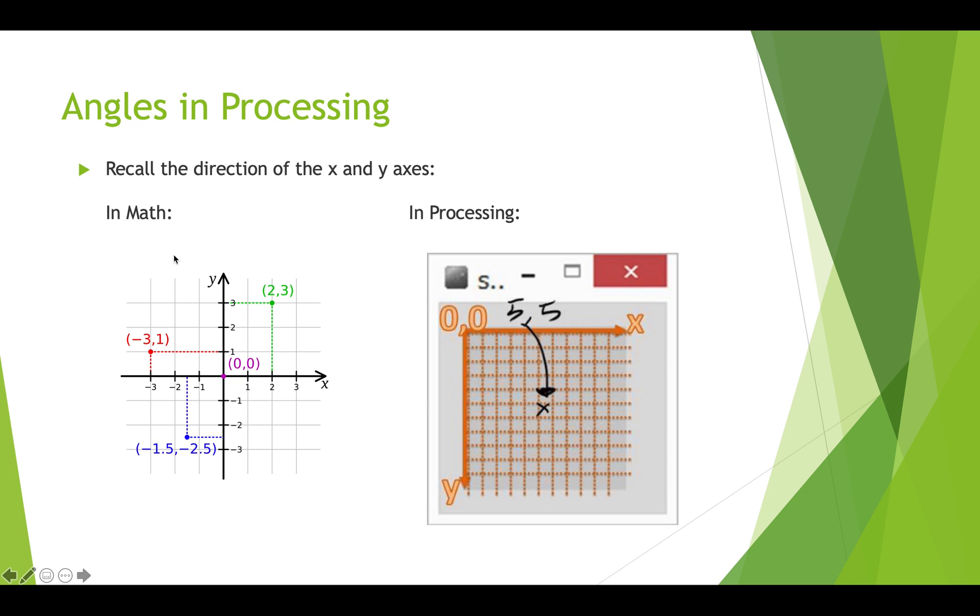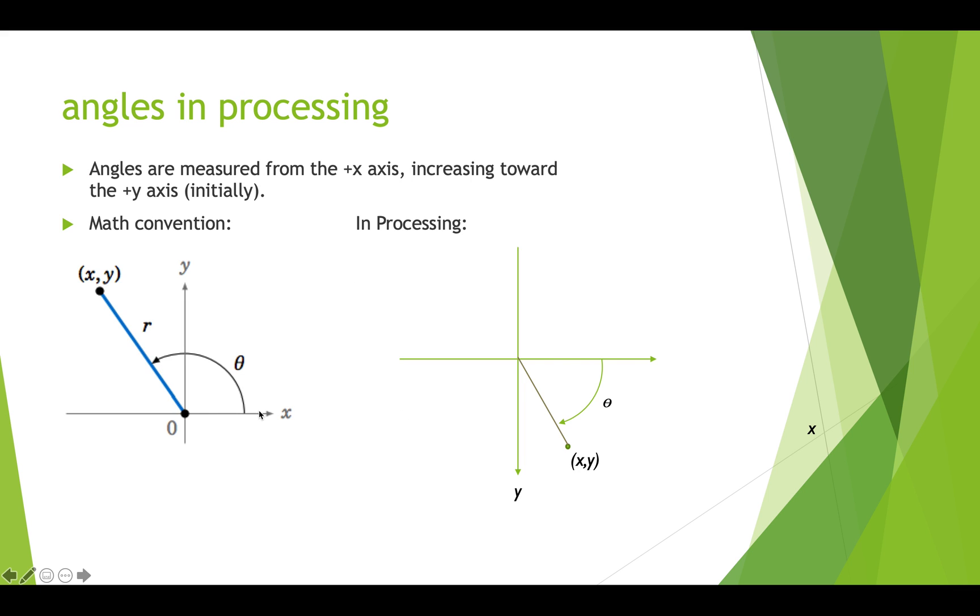Here's our typical math coordinate system where we have 0,0 in the center, and the y's get positive as you move above the x axis and negative below. In the processing frame, we have 0,0 on the top left corner, so as we move down the processing canvas, the y's get bigger. Angles are usually measured from the x axis increasing towards the y axis. In math we usually go this way, and in processing angles are positive as we go this way, so it's a different direction.